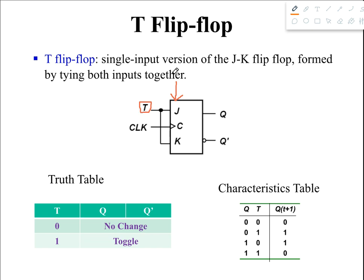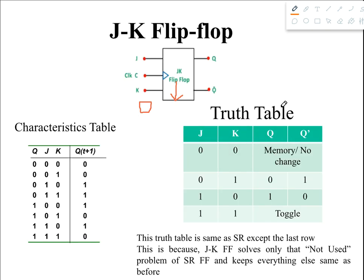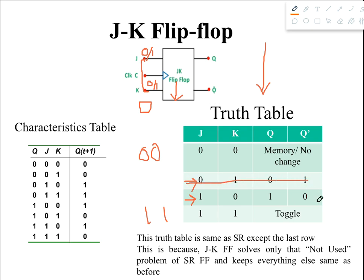This is the diagram of the T flip-flop. Looking at the truth table of the JK flip-flop, if we short both connections J and K — so if J is 0 then K is 0, and if J is 1 then K is 1 — we will only be getting 00 or 11 in the case of T flip-flop, because we tied both inputs together. We won't be getting 01 or 10. So we can cancel those rows from the JK truth table, and since J and K are now the same, we can write them as T.